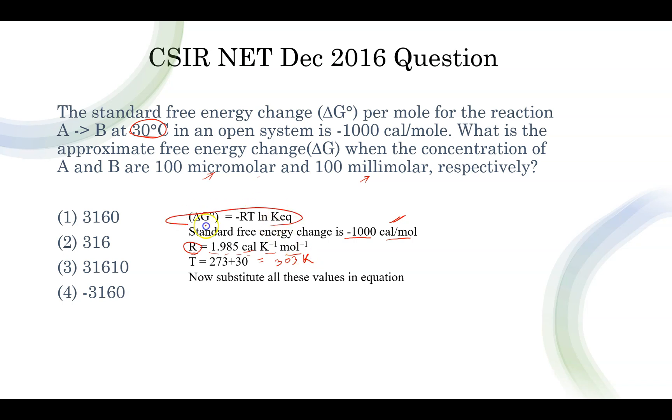Now this is the equation to calculate ΔG°. That is ΔG° equals -RT ln Keq. Now if you substitute all these values over here. Now Keq is what? Keq is the equilibrium constant. And equilibrium constant is given by the formula product concentration at equilibrium divided by reactant concentration at equilibrium. Here product is B. Now what is the concentration of B? It is 100 millimolar, that means 100×10⁻³ molar.